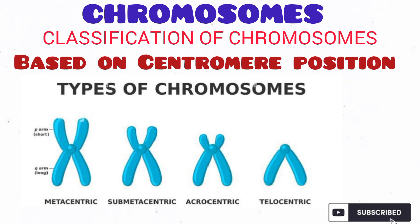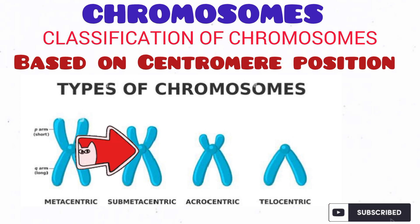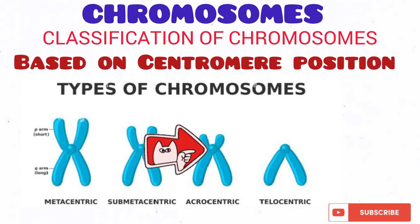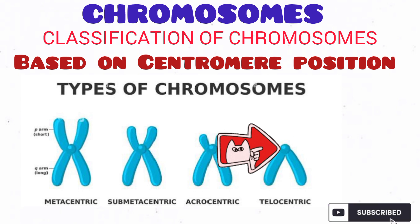Take a look at this diagram. If the centromere is located at the middle of the chromosome dividing the two arms into two equal parts, the chromosome is termed metacentric. If the centromere is positioned such that it divides the chromosome into two unequal halves, it is called a submetacentric chromosome. Now take a look at the acrocentric chromosome type — the centromere is located close to the end of the chromosome, dividing it into one extremely long part and one extremely short part. This is termed acrocentric. While in the case of telocentric, the centromere is actually located at the end of the chromosome.